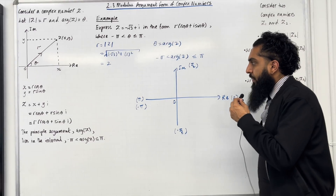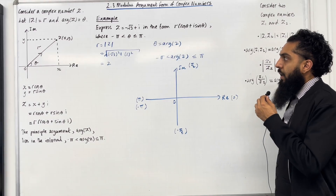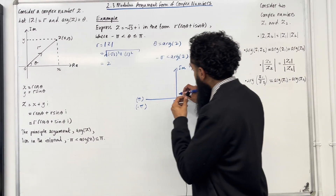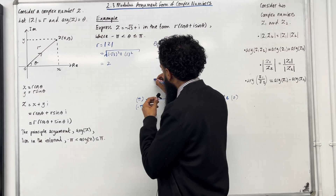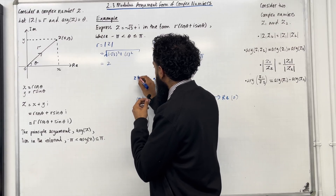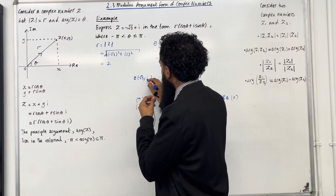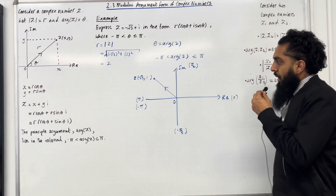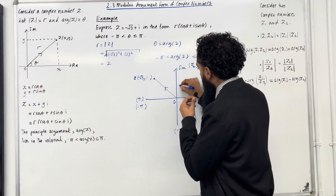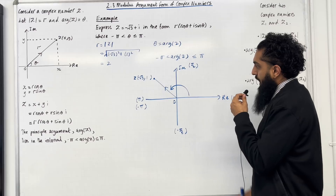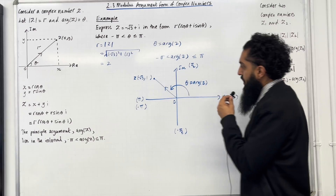This is the origin. Now I'm going to plot the complex number −√3 + i, which will be in the second quadrant. As a coordinate it is (−√3, 1). The argument of z is the angle θ = arg z, which I want to work out.